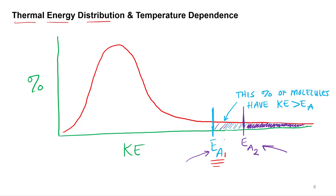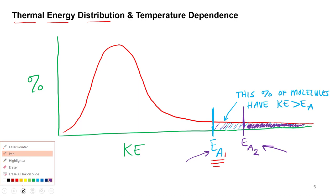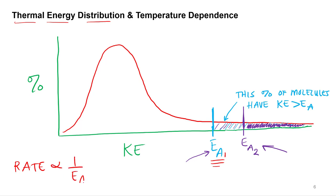So it turns out that the lower the activation energy, the higher the rate is going to be, because more molecules have enough kinetic energy to overcome the activation energy. If we increase the activation energy we lower the rate; if we lower the activation energy we increase the rate. What type of relationship is that? Inversely proportional. So rate is inversely proportional to the activation energy.